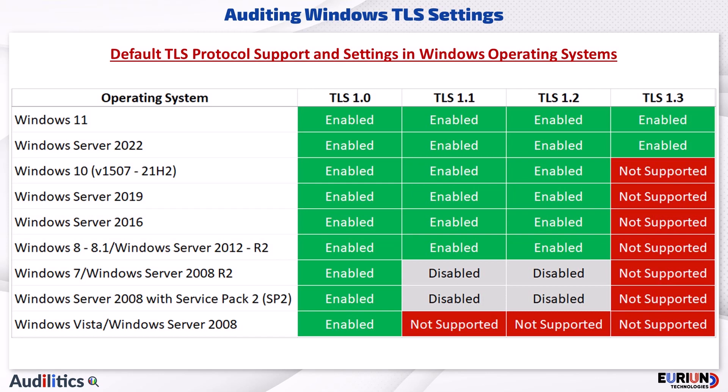As we can observe in the table, Windows 7 and Server 2008 have the secure TLS 1.2 disabled by default. That means we will need to enable TLS 1.2 and disable the early TLS versions for these operating systems.